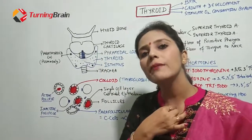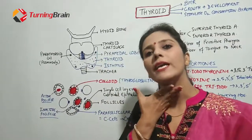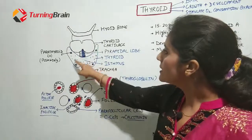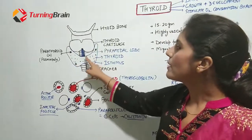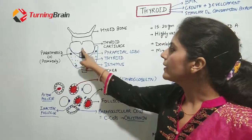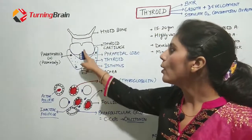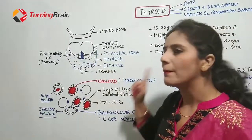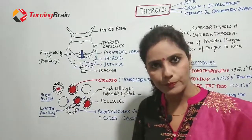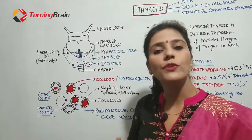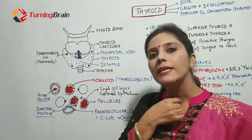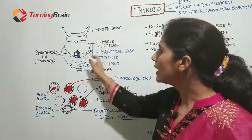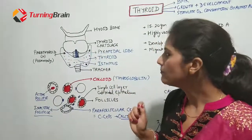Here is our trachea and there is the thyroid gland. From this gland, sometimes on the right side, there is another lobe that we call the pyramidal lobe. The pyramidal lobe is a lobe which extends anteriorly from the thyroid gland.